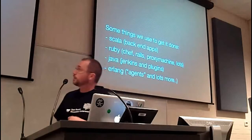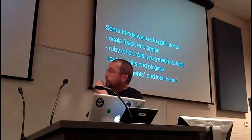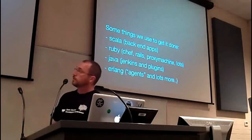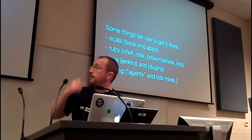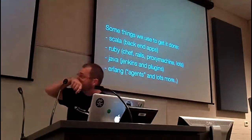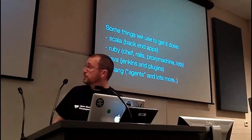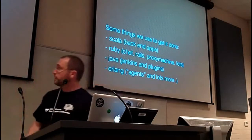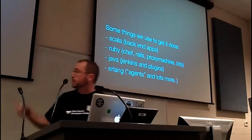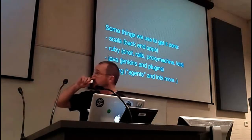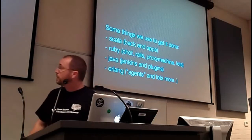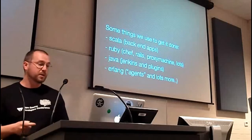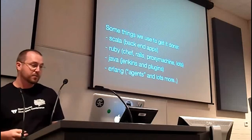Some of the things I've used to get it done so far: there's a lot of code in Scala at the back end, some web apps, a whole lot of Ruby floating around, we've got a Chef contributor on staff, a couple of big Rails apps, ProxyMachine is a great little tool. Obviously Java for the Jenkins build server — there was a talk on that by Cliff earlier this week — and plugins for that. And what I'm going to cover mostly today is what we do with Erlang.